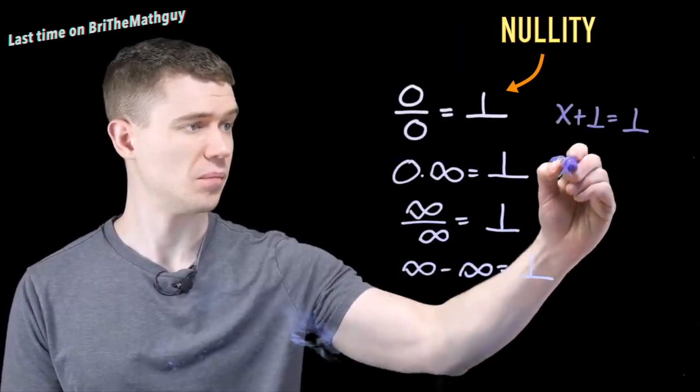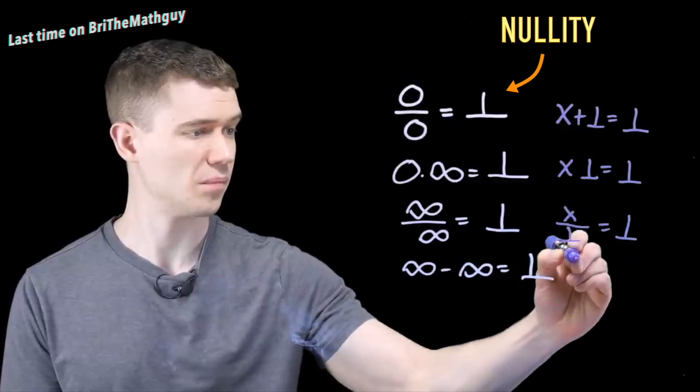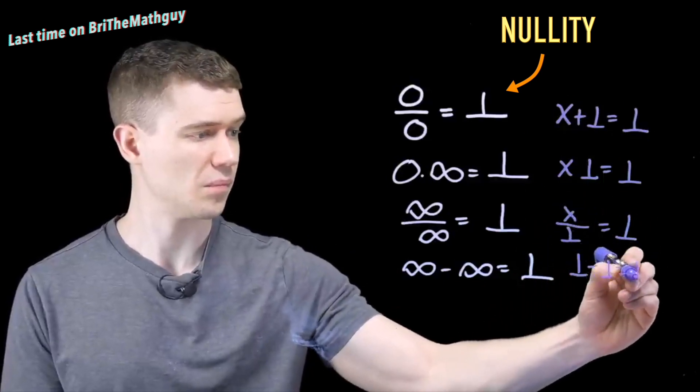And you can do a whole bunch of other things if you introduce this nullity element. It's like this ultra-absorber. And so anytime we interact with it, it just becomes the nullity. And so this is one way you can get around defining things like infinity to the 0.